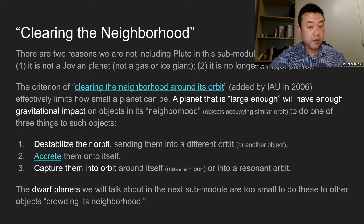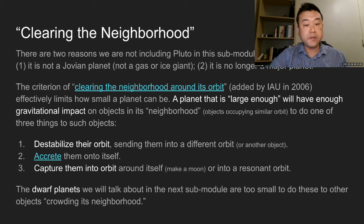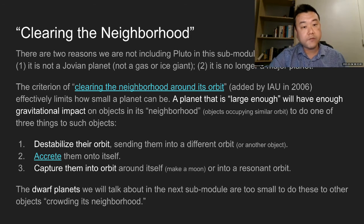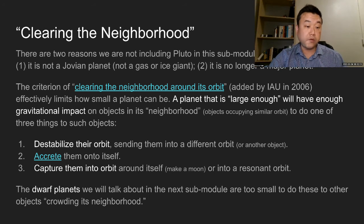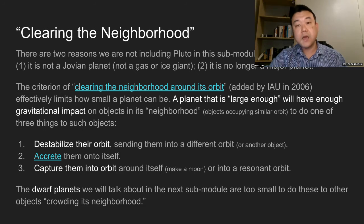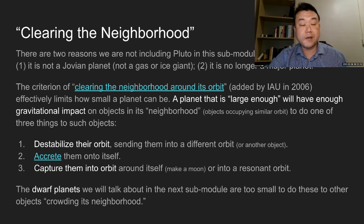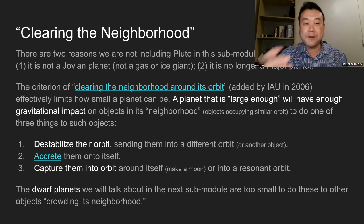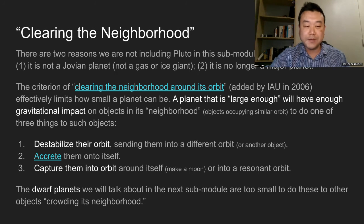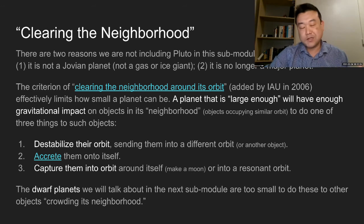And there is a way this happens when a planet is large enough through its gravitational interaction with any other objects that are in a similar orbit. It'll do one of these three things if it's large enough. And when it is not large enough, it fails to do one of these three things and it's not a planet, it's a dwarf planet.